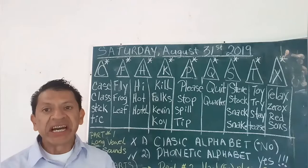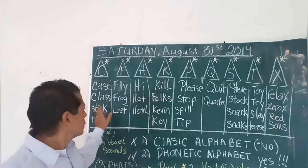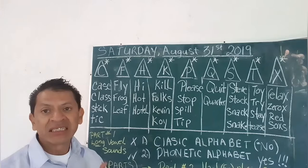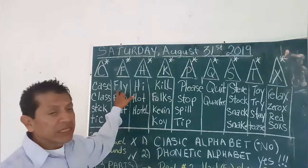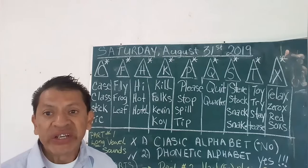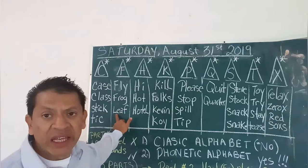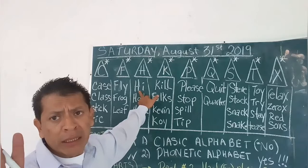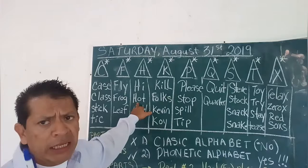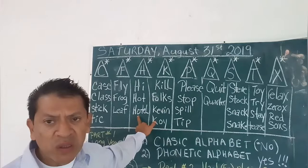Here we go. We pronounce: case, class, stick, stick, tick. Hear that? F — Fly, labio, fly. Frog. Leaf. H — High. High is the most common greeting in English. Hot, Hotel.